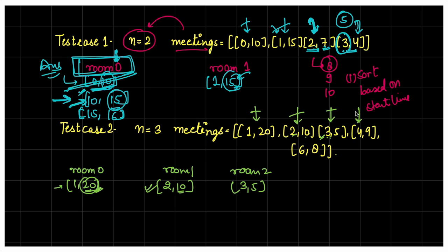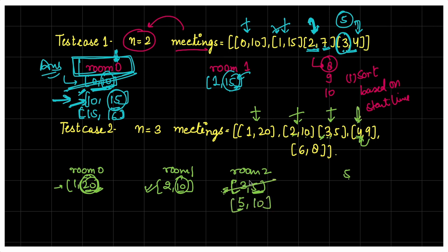Now 4,9 arrives. Room 2 ends at 5 — earliest end time. We wait for it to free. Since 5 < 4 is false (room not free yet when meeting arrives), this meeting gets delayed: it waits until room 2 frees at 5, then starts at 5 and ends at 10 (duration = 9-4 = 5). So 4,9 is scheduled in room 2 starting at 5, ending at 10.